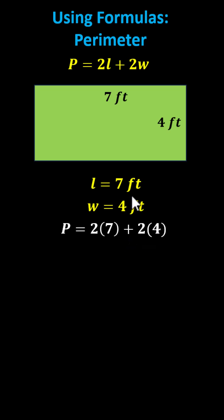Now we evaluate the right side using the order of operations. We always multiply and divide before we add and subtract, which indicates we determine the two products next. 2 times 7 is 14, 2 times 4 is 8. The perimeter p equals 14 plus 8, which equals 22.